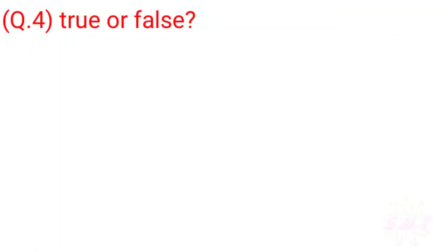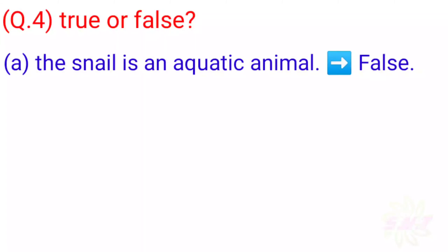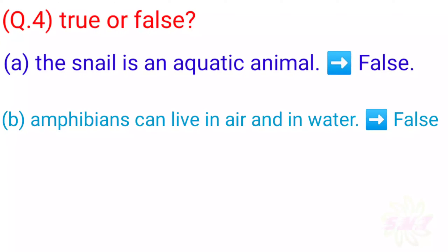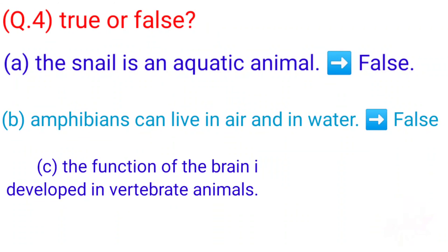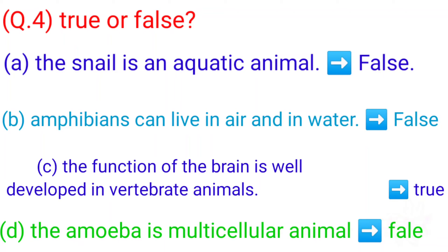Question 4: True or False? A: The snail is an aquatic animal. Answer: False. B: Amphibians can live in air and in water. Answer: False. C: The function of the brain is well developed in vertebral animals. Answer: True. D: The amoeba is a multicellular animal. Answer: False.